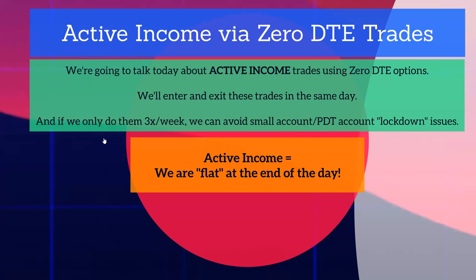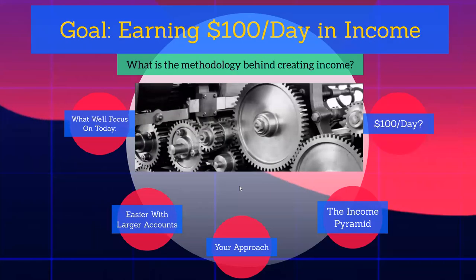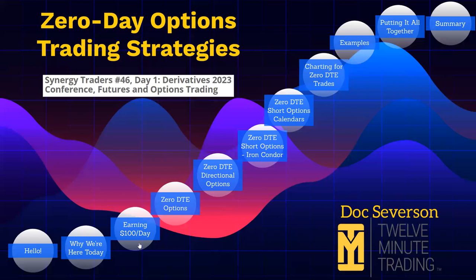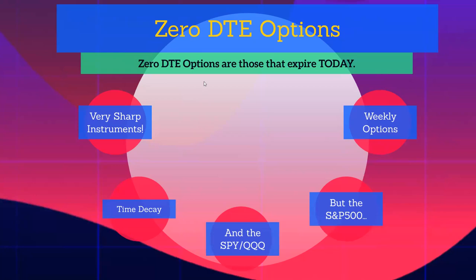For active income using zero DTE options, we enter and exit trades in the same day. If you have less than $25,000 and want to avoid pattern day trader issues, you can do them three times a week and stay within the PDT umbrella. Generally, you're flat at the end of the day — you can sleep at night and don't have to worry about what happens in the world after you close your trades.